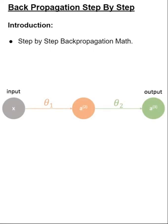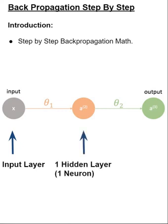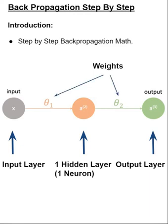Let's first define a simple feed-forward network. First is our input layer denoted with an X, which is also the feature or data we are passing into the network. Next is our hidden layer with only one neuron shown in orange, and the neuron's value is a superscript 2 — we shall refer to it as a2 in this video. Next is our output layer again with only one neuron, referred to as a3. The weights of the network are referred to by theta: theta1 is the set of weights between the input layer and hidden layer, and theta2 are the weights between the hidden layer and the output layer.